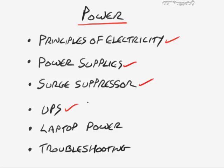We'll also take a look at UPSs, which is an uninterruptible power supply, and that will help to make sure that your computer stays up at least long enough to save documents if the power goes out. We'll look at laptop power as well, and the power cords for those are auto-switching so you don't have to change them to different voltages. We'll also take a look at troubleshooting power, which is an important topic for the A+ exam.